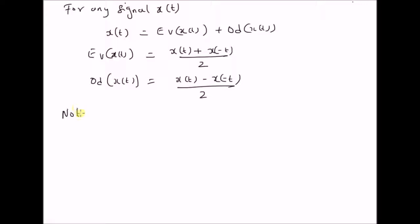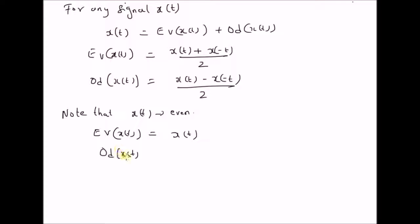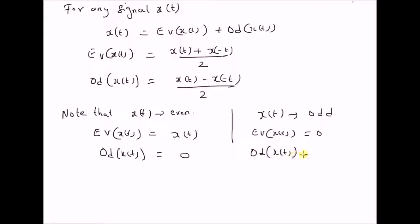In the special case when x of t is even, the even component of x of t is equal to the original signal itself, and the odd component is clearly 0. When x of t is an odd signal, the even component should be clearly 0, and the odd component is equal to the original signal x of t. This is because for even signals, x of minus t equals x of t, so the even component becomes x of t. For odd signals, x of minus t can be replaced by minus x of t, so the odd component becomes x of t.